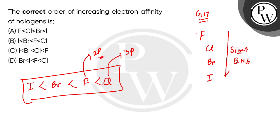So you get to see this order: I less than Br less than F less than Cl. Accordingly, your option B is correct and the rest of the options are incorrect. I hope you understood. Thank you.